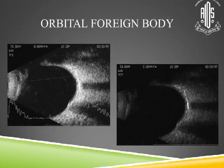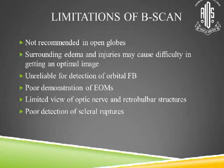For an orbital foreign body, again reduce the gain so the foreign body is clearly visible. Limitations of B-scan: it's not recommended in open globes; surrounding edema and injuries may cause difficulty in getting an optimal image; it's unreliable for detection of orbital foreign bodies; there is poor demonstration of extraocular movements; limited view of optic nerve and retrobulbar structures; and poor performance in scleral ruptures.